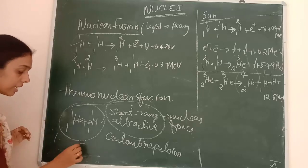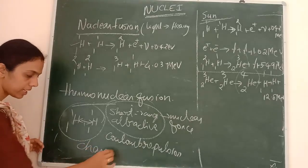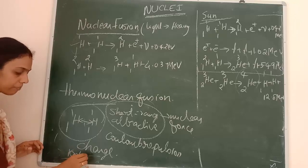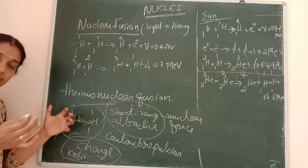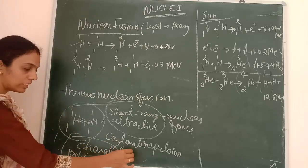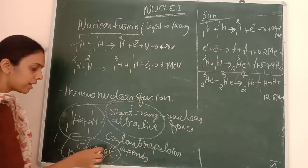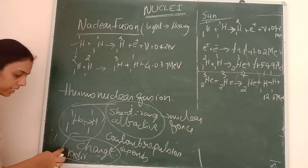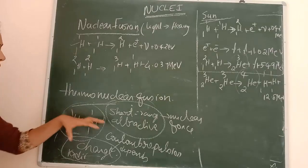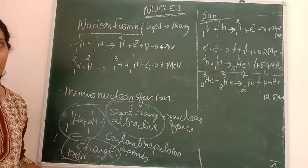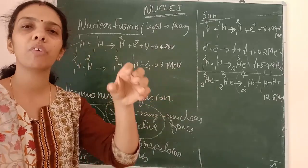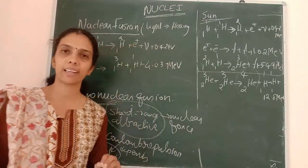The coulombic repulsion depends on the charge of each nucleus and the radii of the nuclei under interaction. Because of these two factors, we need a high amount of energy to overcome the repulsion.